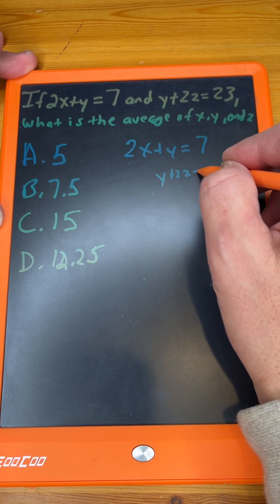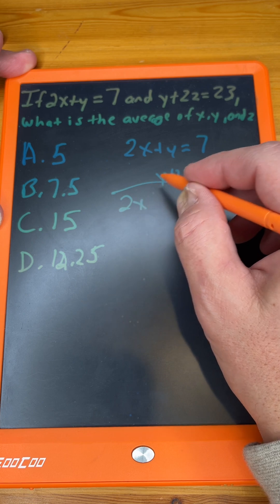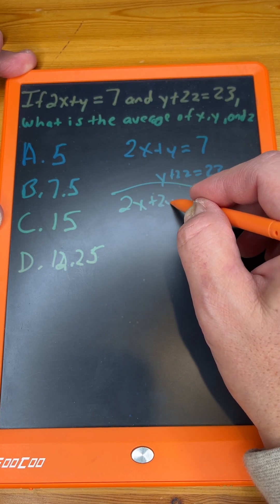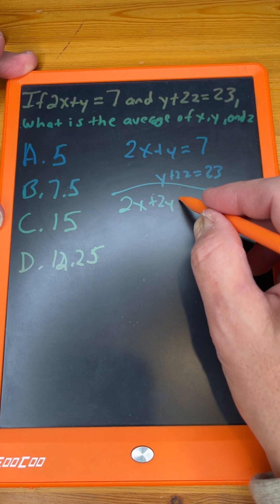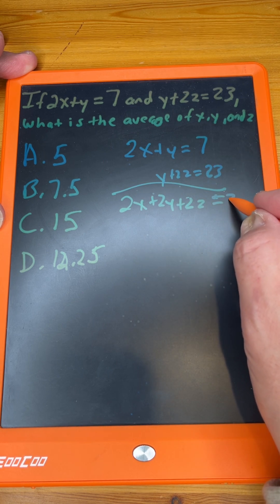y plus 2z equals 23. x's go to 2x, y plus y is 2y, and then there's a 2z. 7 plus 23 equals 30.